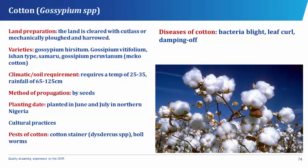Cotton has its botanical name as Gossypium species. Cotton is a fiber crop and belongs to the plant family Malvaceae. It produces cotton lint which is a white fiber used in textile industries. In planting cotton, the land is cleared with cutlass or mechanically ploughed and harrowed to make it fit for planting of cotton seeds.